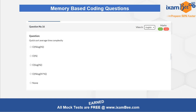The sixteenth question is related to quick sort, specifically its average time complexity. If you have studied the quick sort algorithm, you need to choose the correct average time complexity from the given options.